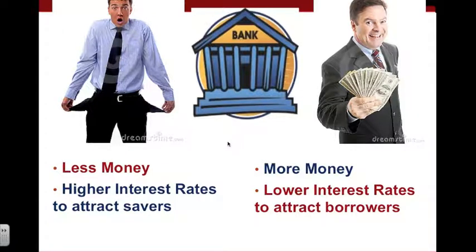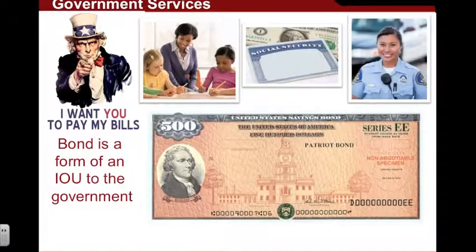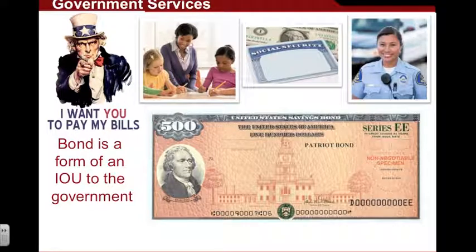The Federal Reserve understands how this works and can control this pendulum — this swing of either less money or more money in the economy. So now we're going to get into how the Federal Reserve actually increases or decreases the money supply — like, how do they get the money to the banks? Before we talk about that, let's describe the next couple of slides dealing with bonds.